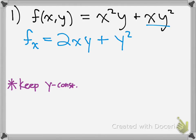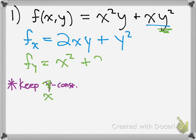Now we'll do the partial derivative with respect to y. Instead of keeping y constant, this time we're going to keep x constant. You would have x squared — x just stays the same — times the derivative of y, which is 1. Then the derivative of y squared is 2y, and you leave x, so you get 2xy. That's just the partials for both x and y.